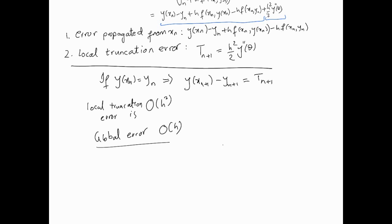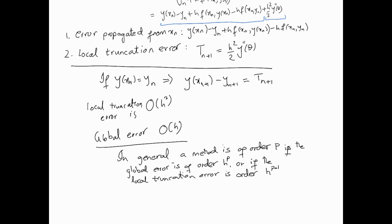So, what I'm trying to say, just to summarize, and this is a general result, in general. A method is of order p if the global error is of order h^p, or it is equivalent to the idea if the local truncation error is order h^{p+1}. So that is an important result, and you can see that the higher p is, the better the method would be.